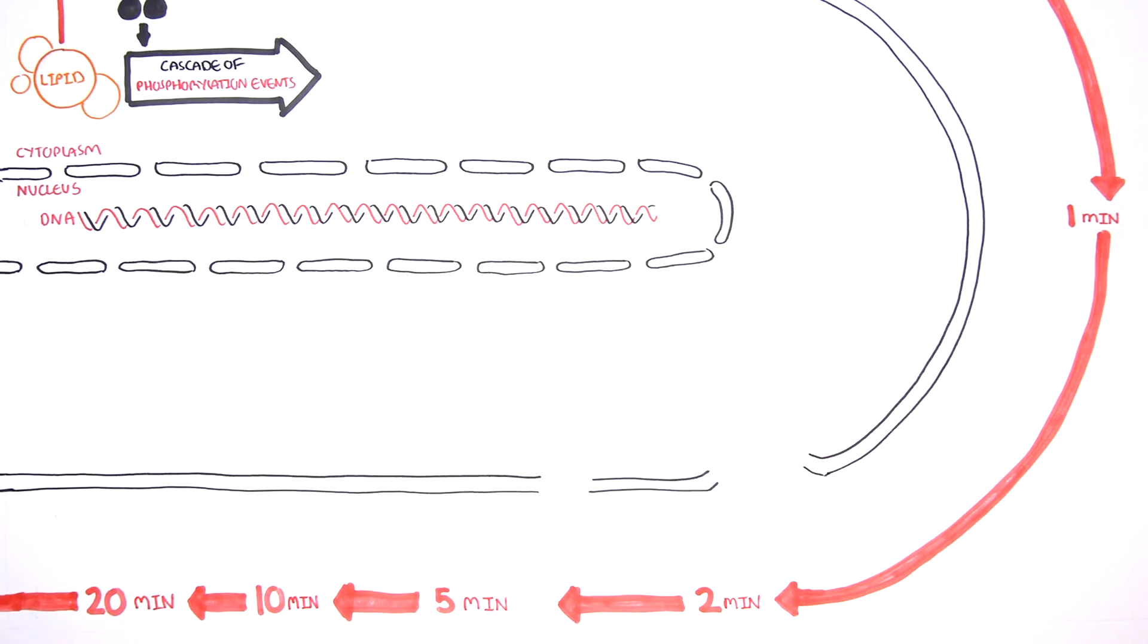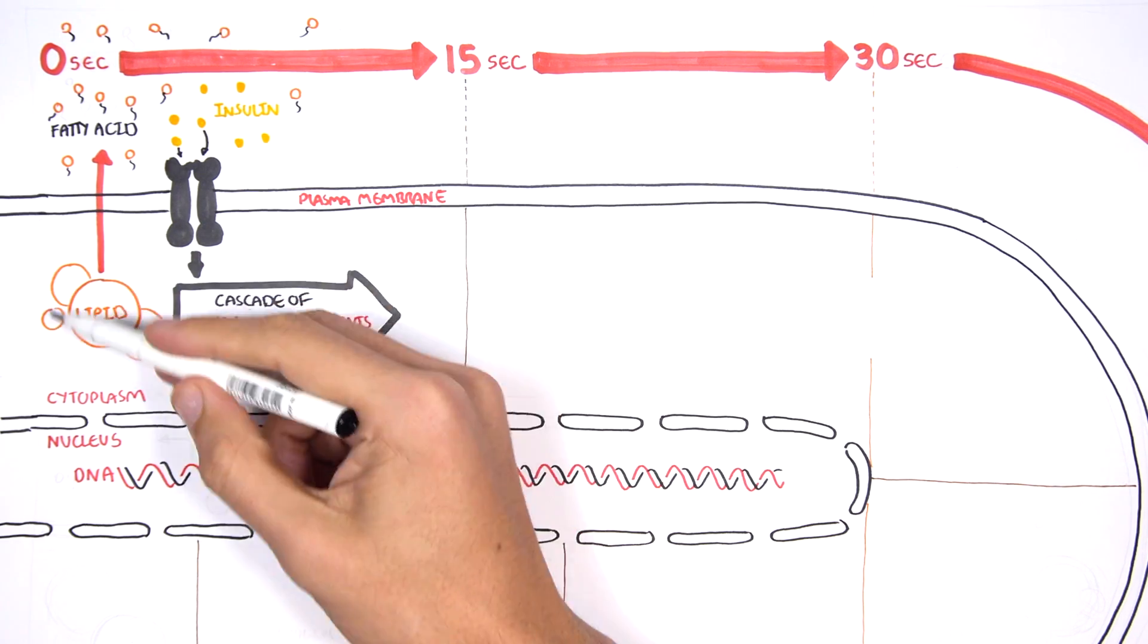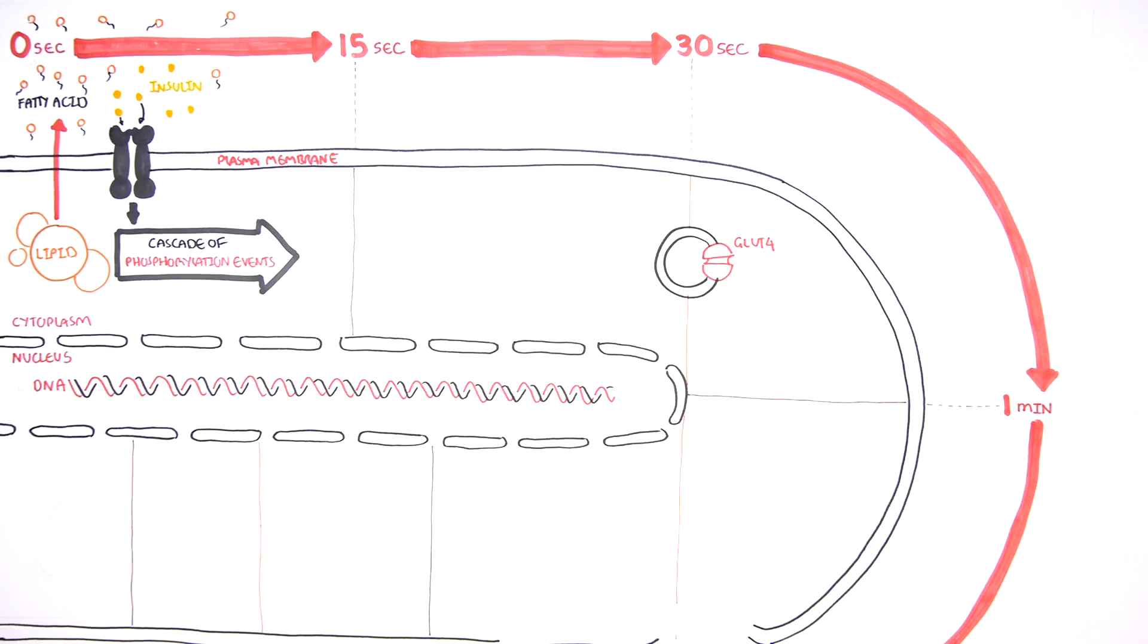The insulin phosphorylation cascade leads to the inhibition of lipid breakdown beginning right away. By 30 seconds, it stimulates GLUT4 glucose transporters to make their way to the surface of the cell.